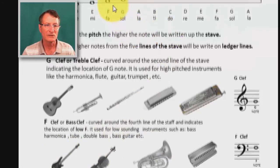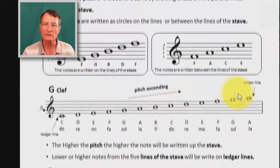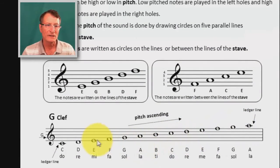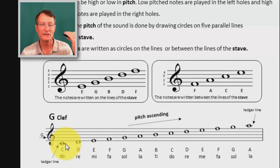So let's go back and see the notes on the stave. And if we want to draw a sound lower than the G clef, we use a ledger line and we put the notes on it.